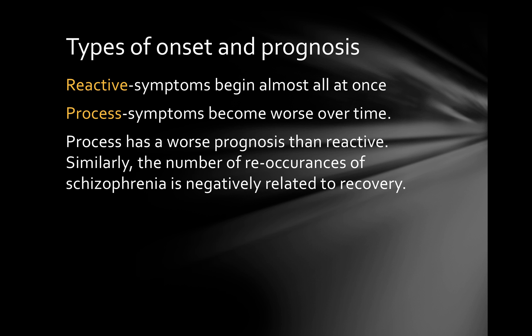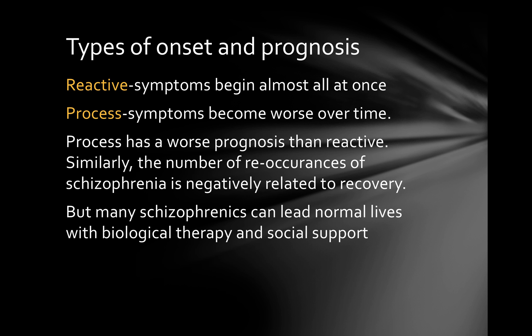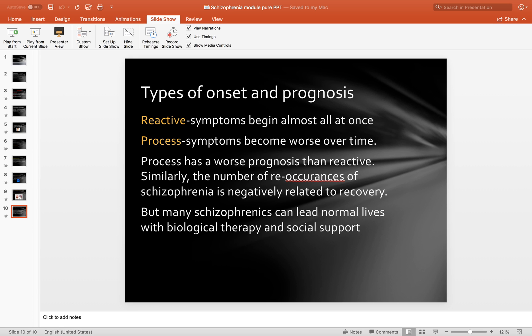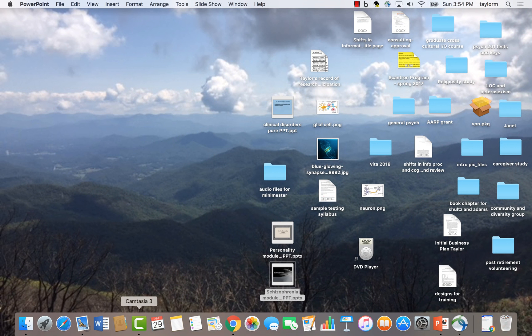Unfortunately, if a person's symptoms happen slowly over time, it's less likely they'll have a milder form of schizophrenia and be able to push through. The number of reoccurrences of schizophrenia is also negatively related to recovery. However, the introduction of antipsychotic drugs has really improved quality of life for many schizophrenics — some are able to move out of closely supervised settings and regain quality of life. That concludes our session on schizophrenia, and I hope you learned a lot about this important disease and our understanding of this mental illness.